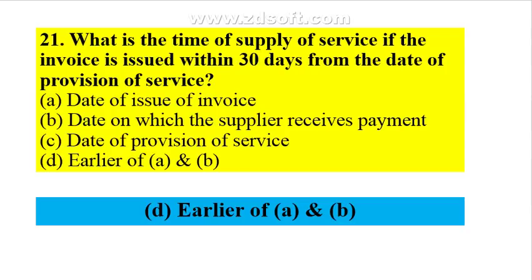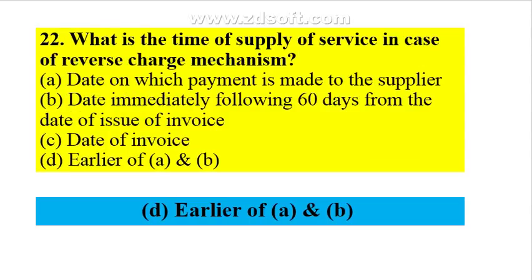What is the time of supply of service if the invoice is issued within 30 days from the date of provision of service? It is the earlier of: the date of issue of invoice, or the date the supplier receives the payment — whichever is earlier. In case of reverse charge mechanism, it is the earlier of: the date on which payment is made to the supplier, or the date immediately following 60 days from the date of issue of invoice.